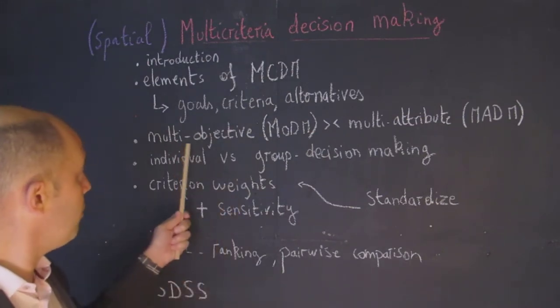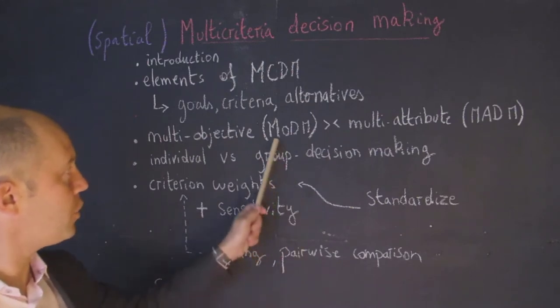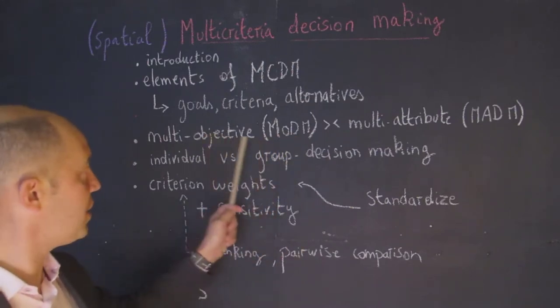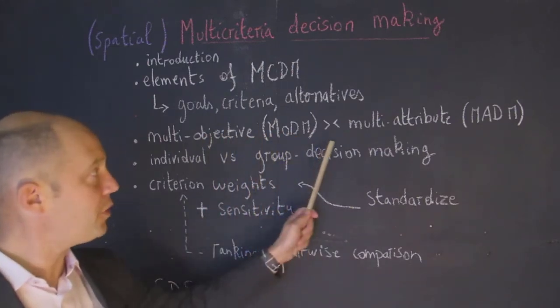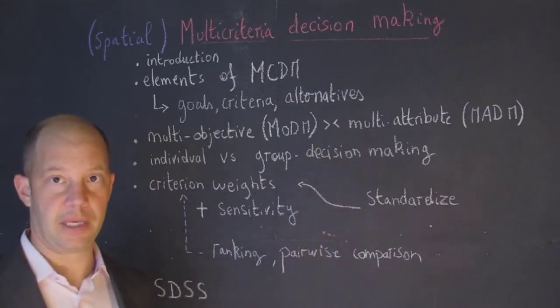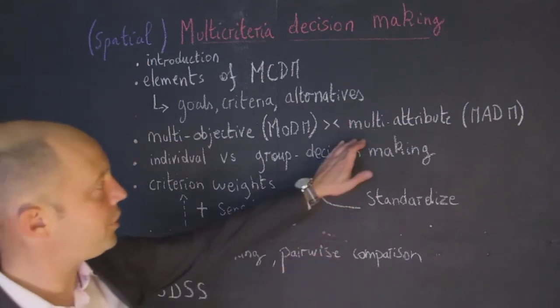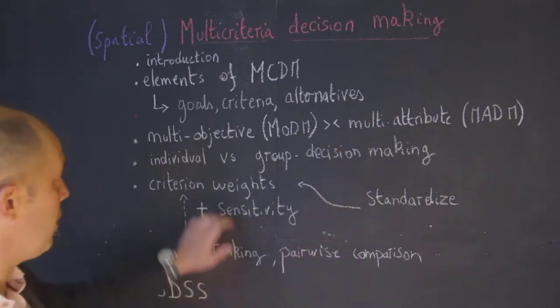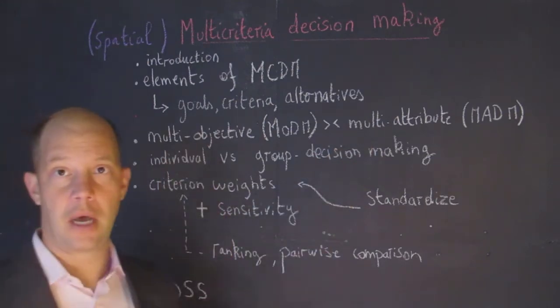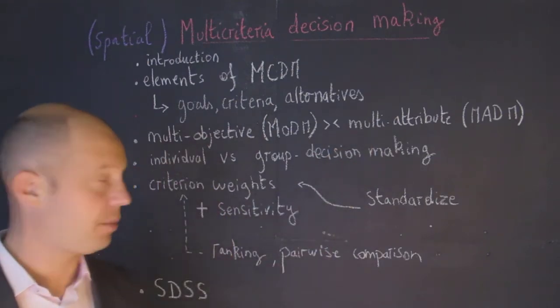Then we'll talk about multi-objective, also called MODM (multi-objective decision-making), versus multi-attribute decision-making. Most of the time we are dealing with multiple attributes, and when we talk about multiple objectives this is a topic we have covered in spatial optimization.